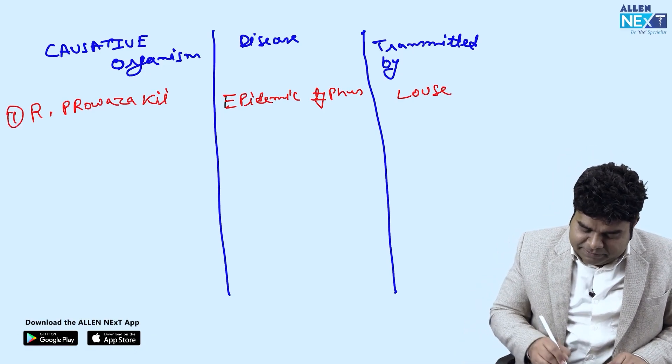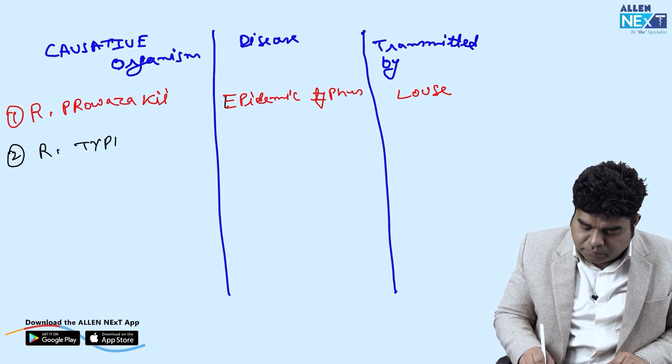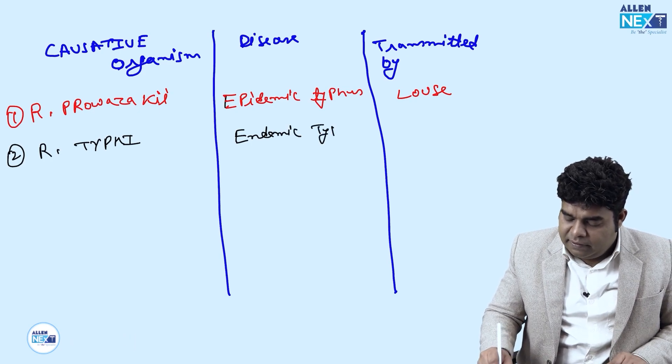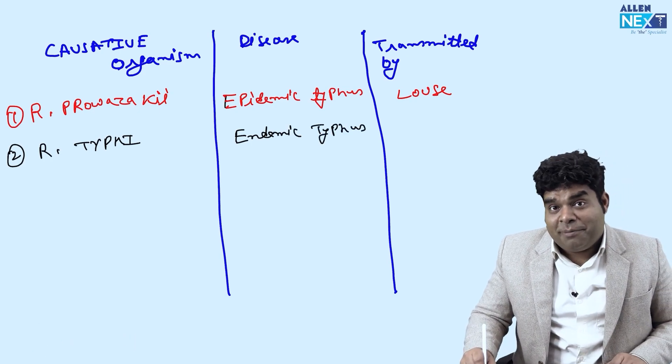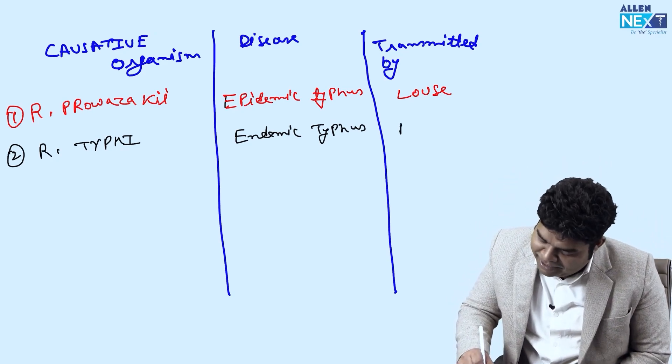Second is Rickettsia typhi. This cause endemic typhus. And endemic typhus is transmitted by, we just read, chota bheem, rat flea.